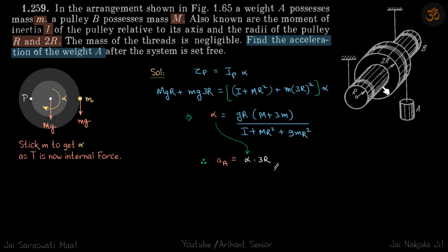We have this spool with inside radius r and outside radius 2r, and a mass is hanging down from the outside part of the spool. We need to find the acceleration of this weight A. Now, as we have done in previous problems, we are going to stick this mass on this side, so let's stick it here.